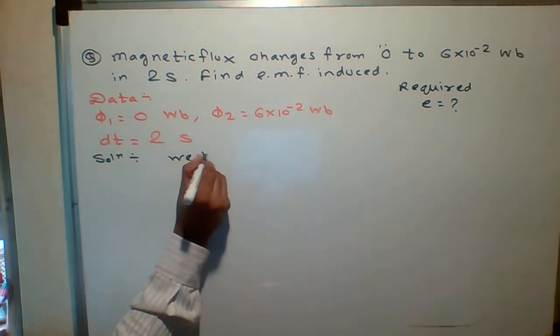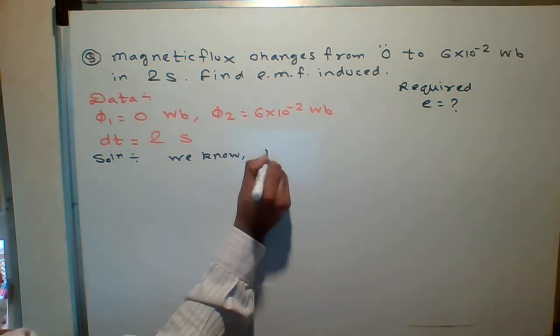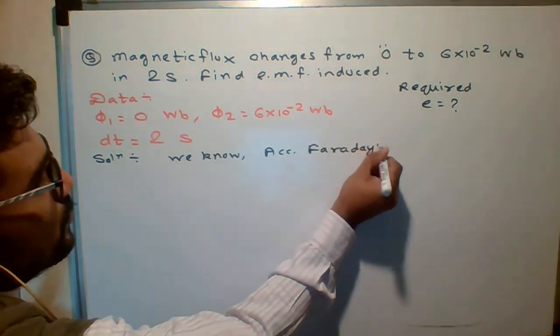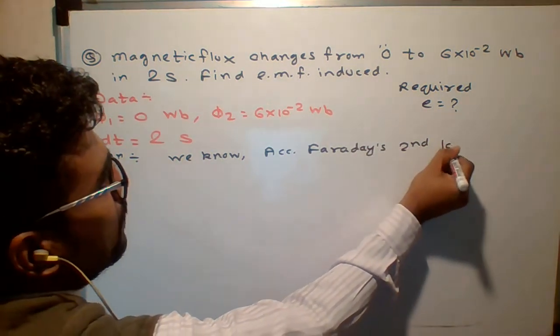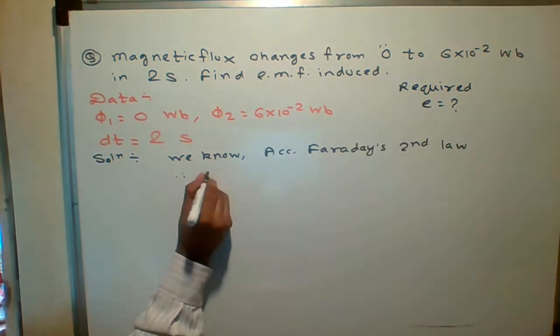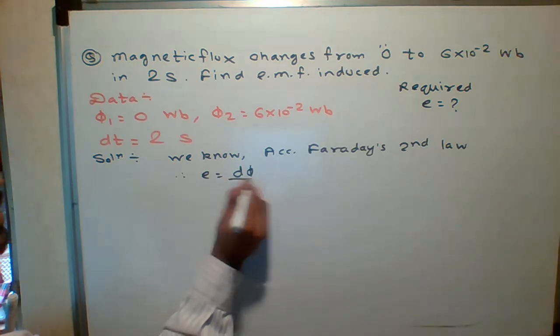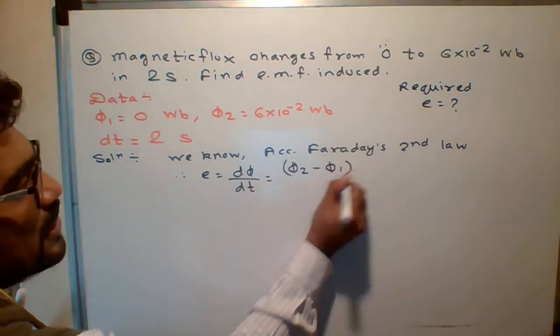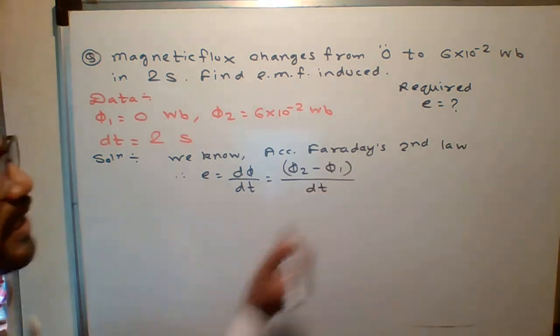According to Faraday's second law, what is Faraday's second law? E is given by dΦ/dt. Agree? dΦ/dt means what? Φ2 minus Φ1, that is change in flux upon change in time.